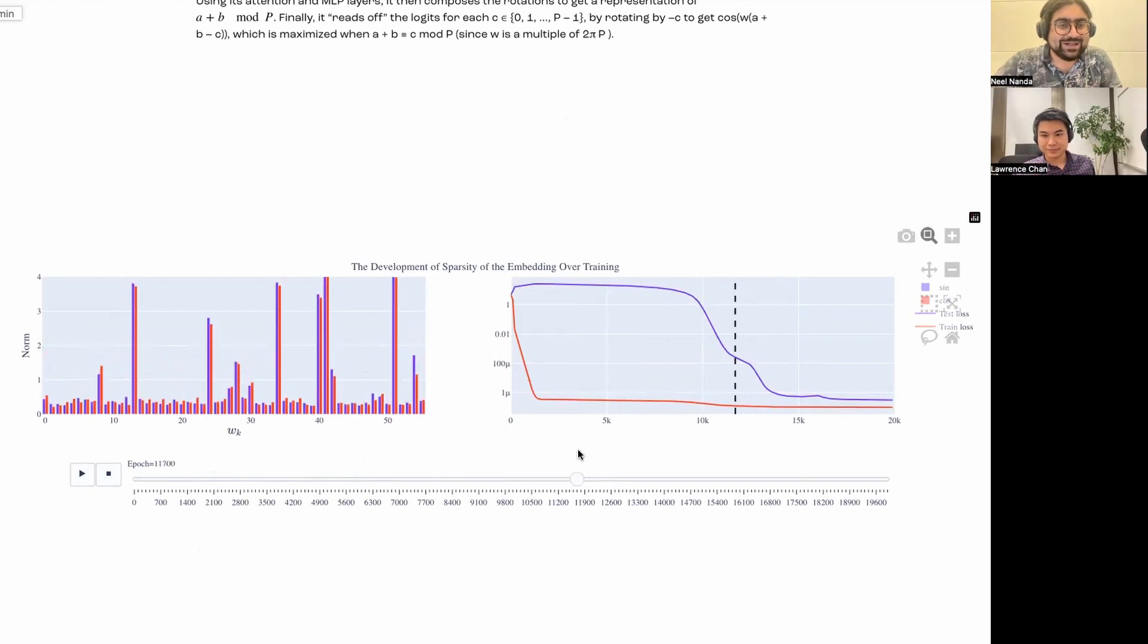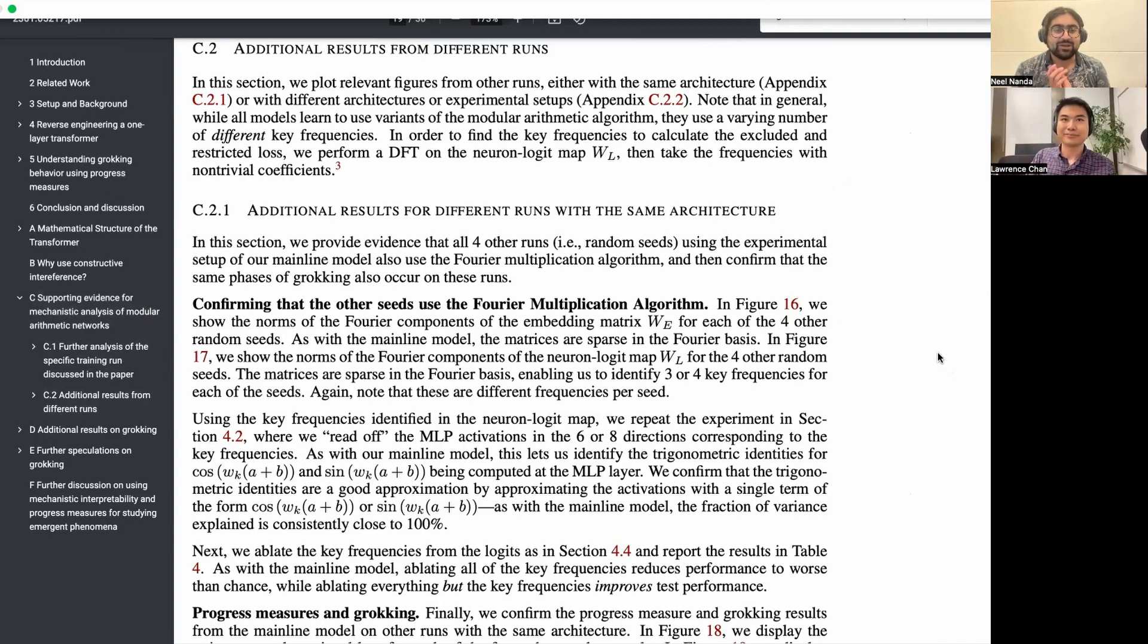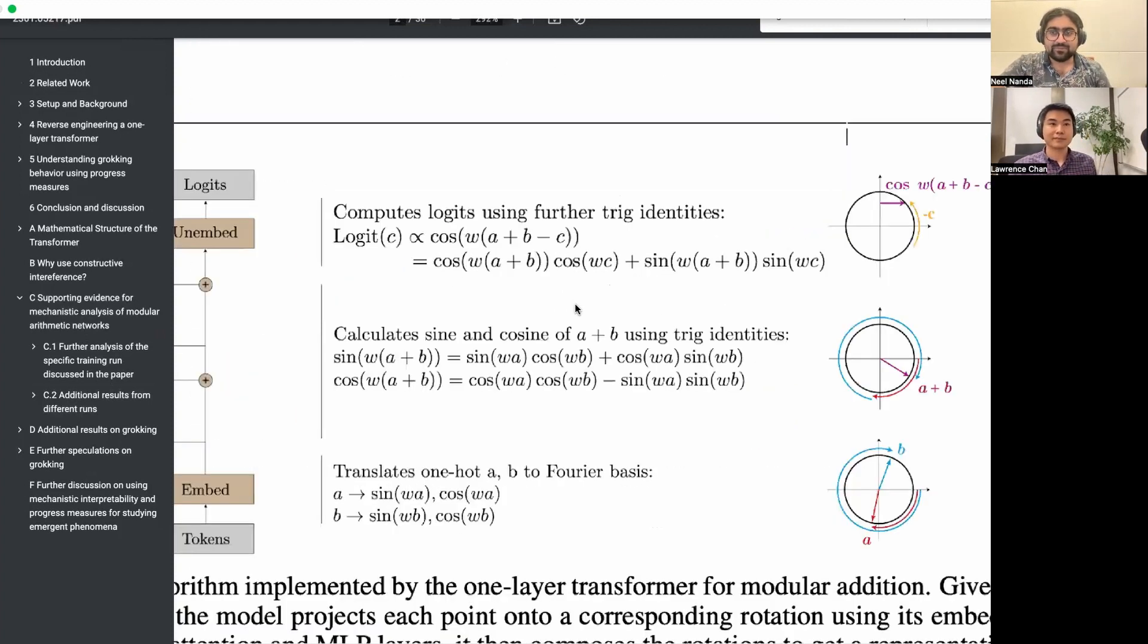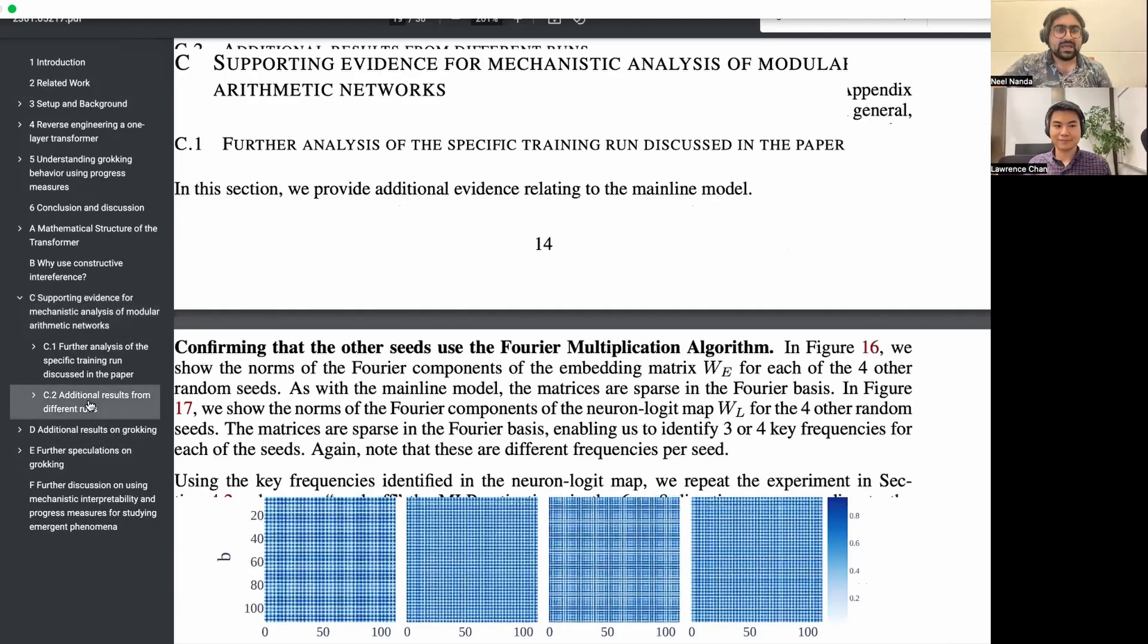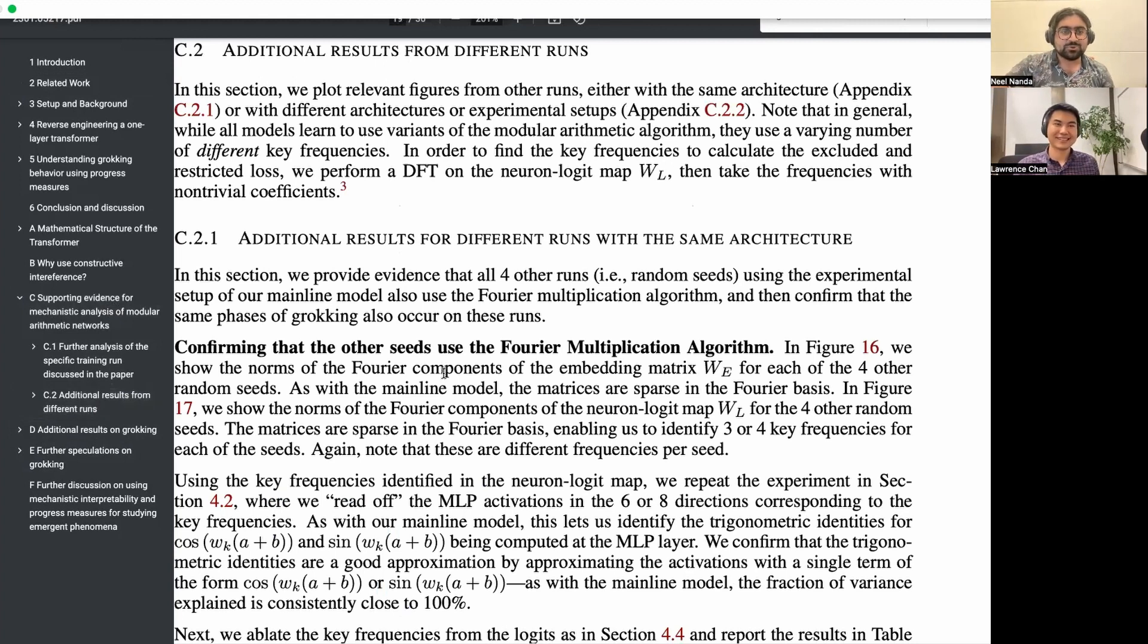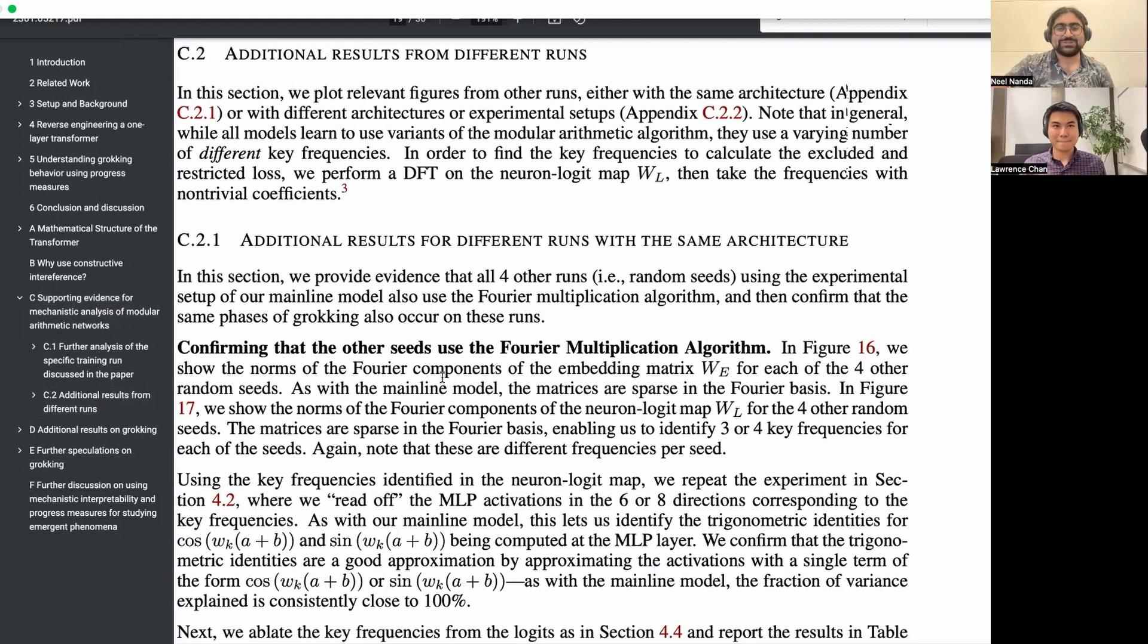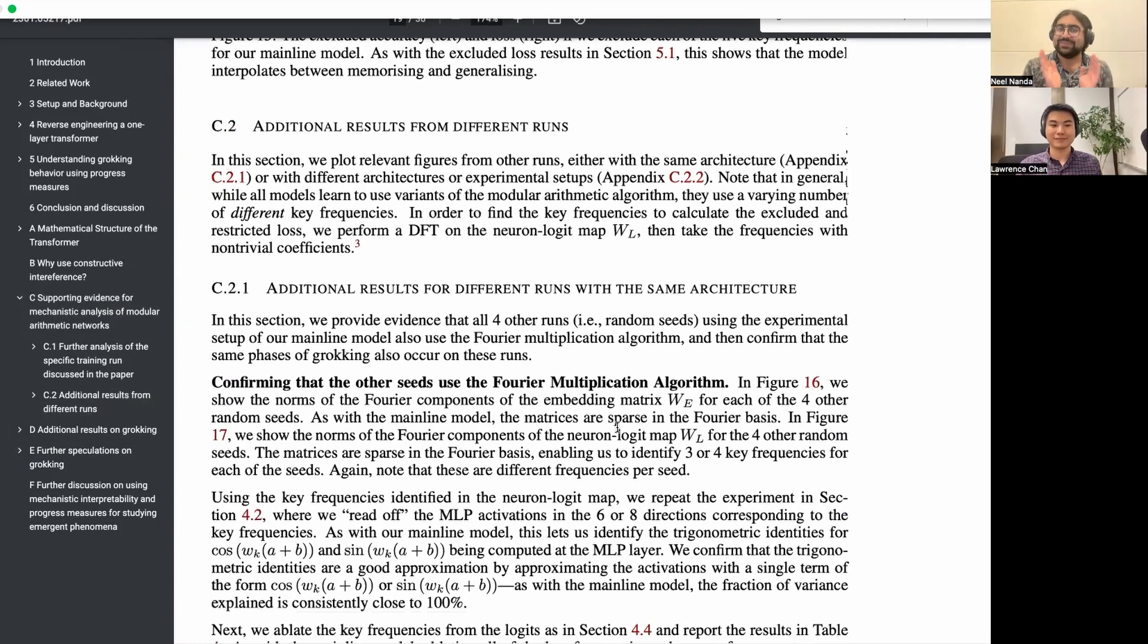Oh, it kind of randomly unlearns frequency 26. Welcome to part three of a walkthrough of progress measures for grokking via mechanistic interpretability. In the first part, we gave a high-level overview of the paper. In part two, we did a deep dive into why we're confident that a one-layer transformer actually learned this weird-ass trig-based algorithm. We are now going to jump into the rest of the paper, and first, Lawrence is going to talk us through why this is not just a single cherry-picked model.